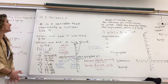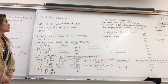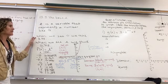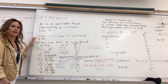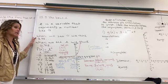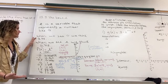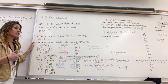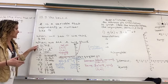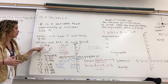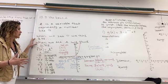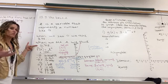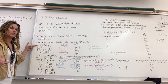13.3, base E. E is a variable that represents a number, much like pi. When we see the value pi, the symbol, we automatically think of the number 3.14. So when we see the value or the variable E, we need to think 2.718. These are both non-ending and repeating numbers. E is just a representation of a number.